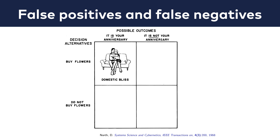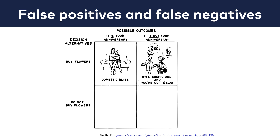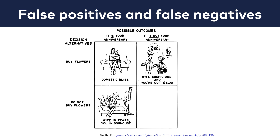Here are all the possible scenarios. It is your anniversary, and you buy flowers — everyone's happy. This is a true positive. It is not your anniversary, but you buy flowers — that's a false positive. Your losses are minimal: your wife gets suspicious, and you're shorter $6. It is your anniversary, but you do not buy flowers — that's the worst possible scenario: wife in tears, you in the doghouse. From a statistical standpoint, this is what we call a false negative.